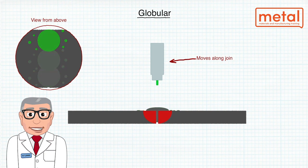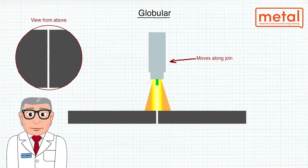The detachment and flight across the arc is random, of relatively low frequency, and takes place at a relatively low current density compared to spray transfer. The resulting weld deposit is not as smooth as that for spray transfer.